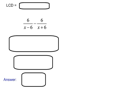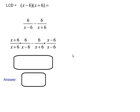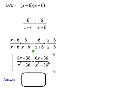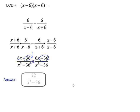The least common denominator here is just the product of the two denominators. Multiply each fraction by the other denominator, remembering to distribute. There is a negative to distribute: 6x minus 6x is 0, and 36 minus a negative 36 gives you 72. So we end up with 72 over x squared minus 36.